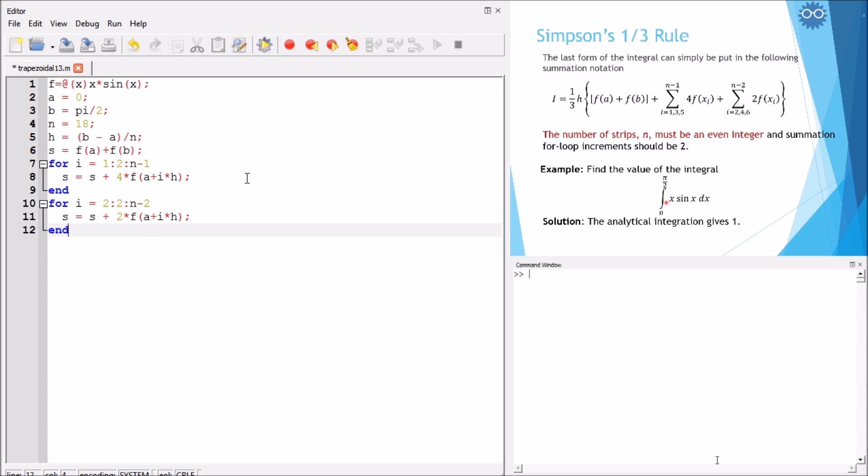And finally, the integral is equal to h over 3 multiplied by s. Now, let's run the code and see. You see in the window that we obtained the solution correctly. This is the code of Simpson one-third rule. Thank you for listening.